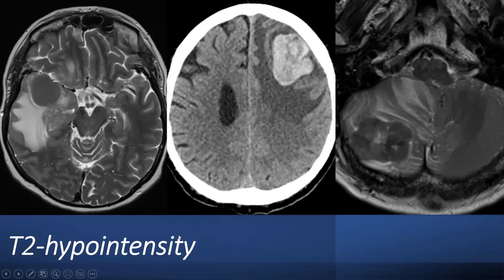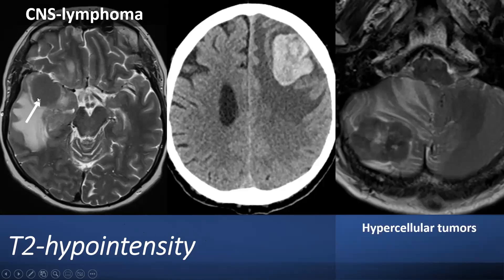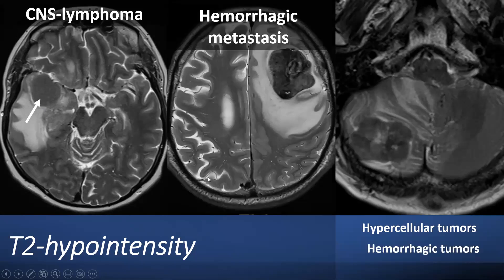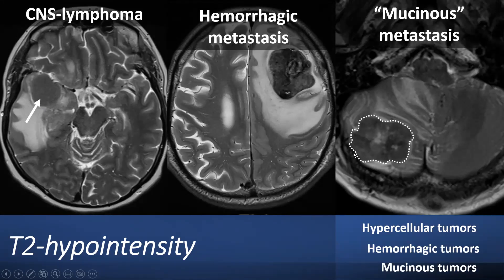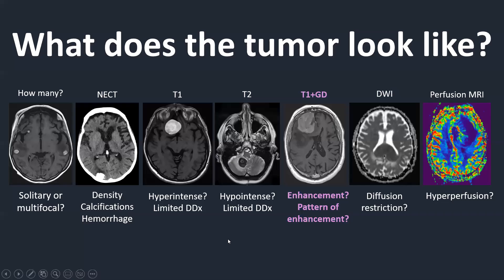For T2 hypointensity: CNS lymphoma is a hypercellular tumour with narrow intercellular spaces, not many water molecules, leading to a low T2 signal. Hemorrhagic tumours are pitch black on T2-weighted images. Metastases from mucinous primary tumours also tend to be T2 hypointense. So hypercellular tumours, hemorrhagic tumours, and mucinous tumours can be hypointense on T2.